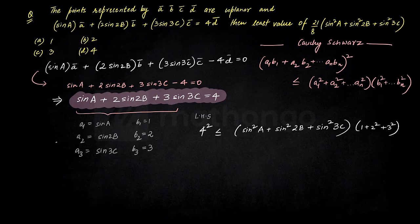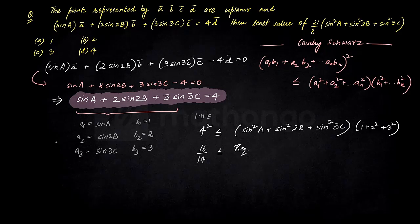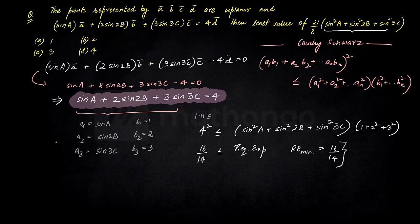And sum of 1 plus 2² plus 3² equals 1 + 4 + 9 = 14. So we get that the required expression — which is sin²a + sin²2b + sin²3c — is always greater than or equal to 16/14. So the minimum value of the required expression is 16/14. Now you multiply 16/14 by 21/8, which gives you the answer as 3.